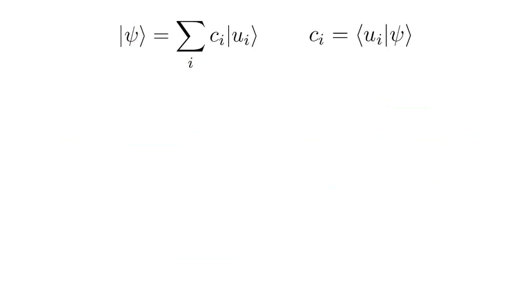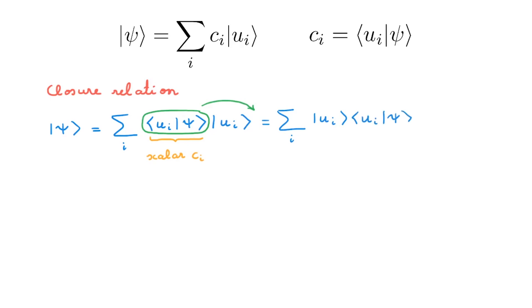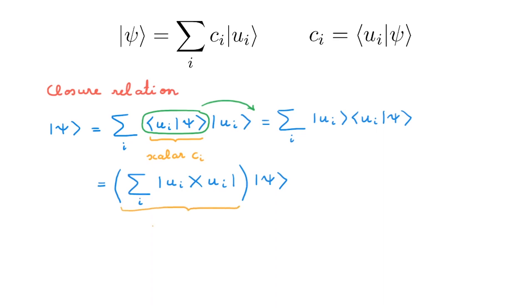Going back to state space, the next idea I want to introduce is that of a closure relation. To do that we start with a ket |ψ⟩ and write it down in the u basis, but this time we write the expansion coefficients as the bracket ⟨u_i|ψ⟩ rather than as the c parameters. We still remember that this bracket is a scalar, so we can move it to the other side of the basis kets and rewrite the whole expression. To make this rearrangement even more explicit, we write down a parenthesis around the sum over i, and we can take |ψ⟩ outside the parenthesis because it doesn't explicitly depend on i. The question we can ask now is: what is this parenthesis? If you have seen my video on operators, you will immediately recognize this as an operator written as an outer product.